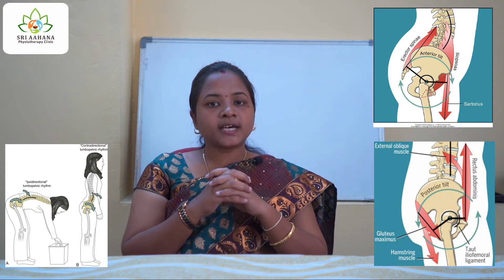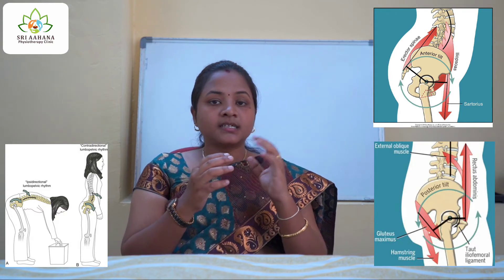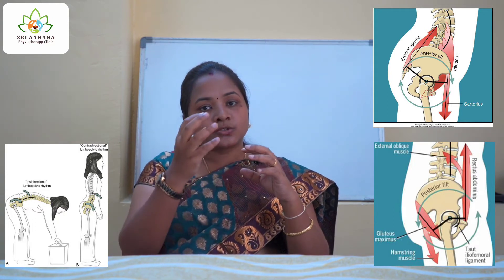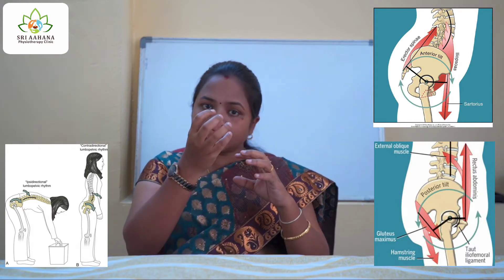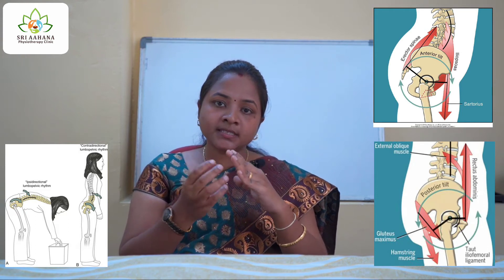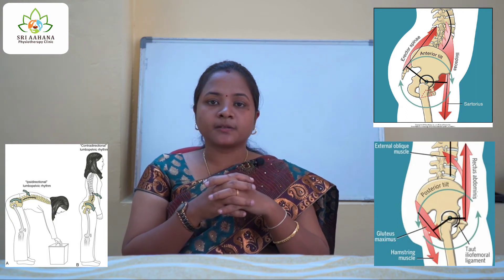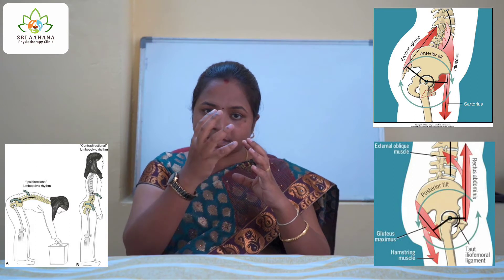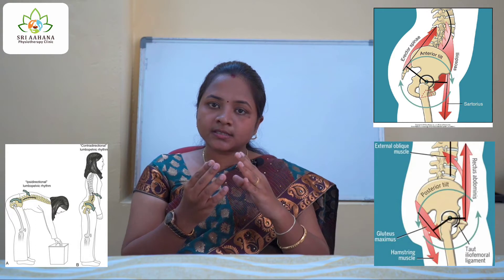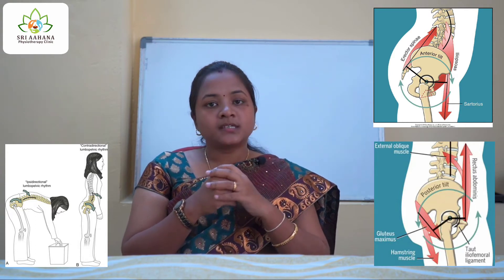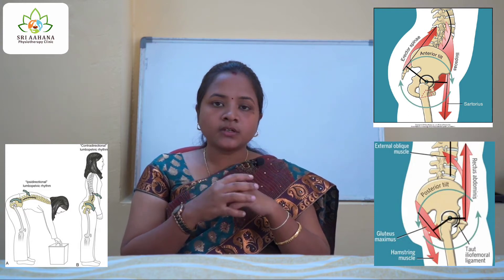What happens here is the eccentric contraction of the spine extensors — they act to bring a controlled motion in trunk flexion. When gravity is pulling you down, what keeps you stabilized is the extensor muscles of the spine, such as the erector spinae of the lumbar spine. This keeps the trunk flexion movement controlled through eccentric contraction of the erector spinae.